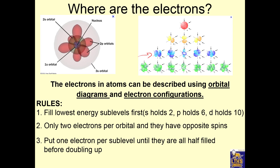To describe where the electrons are, we use orbital diagrams and electron configurations. The rules we use: fill the lowest energy sublevel first. Each sublevel has orbitals in it, and each orbital can hold two electrons. The S sublevel holds two electrons, the P sublevel holds six because there are three orbitals, and the D sublevel holds ten electrons because there are five orbitals. You can only put two electrons in an orbital and they must have opposite spin. Only one electron goes into each orbital at a time until they're all half-filled before doubling up.